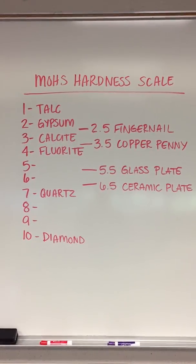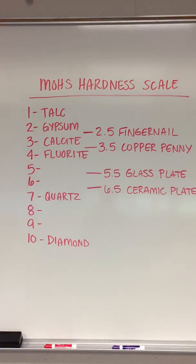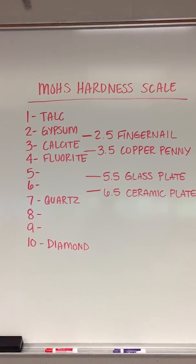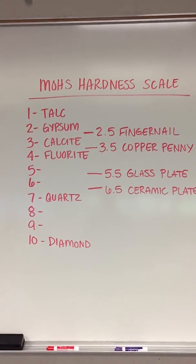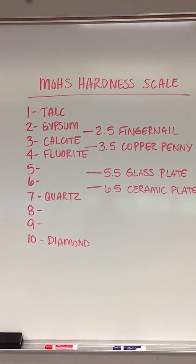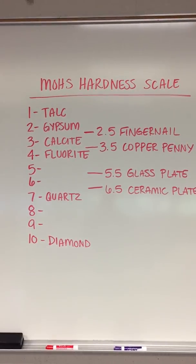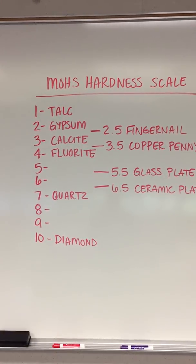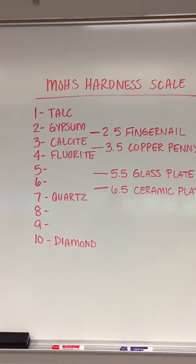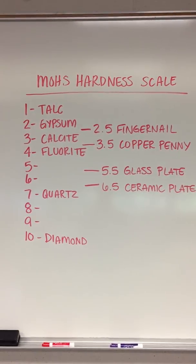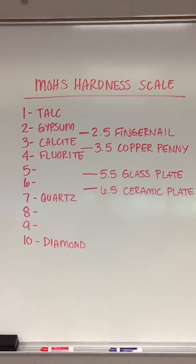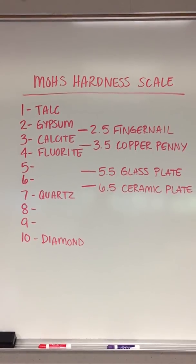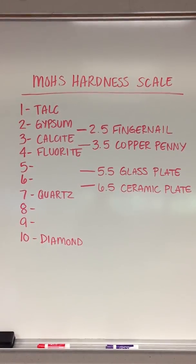Gypsum is a relatively soft mineral, but when it's compressed it goes into making up gypsum board. Calcite, fluorite, then kind of in the middle range of hardness we have quartz, which is a very predominant mineral on our surface. And then of course, diamond is the hardest.